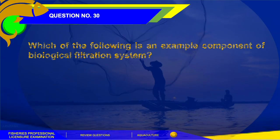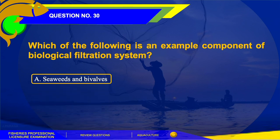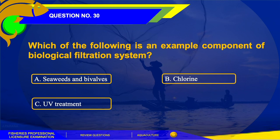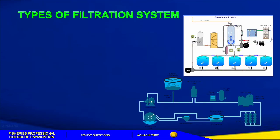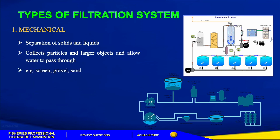Question number 30. Which of the following is an example component of a biological filtration system? The choices are: A. Seaweeds and bivalves, B. Chlorine, C. UV treatment, or D. Gravel and sand. The answer is letter A, seaweeds and bivalves. Mechanical filtration collects particles and larger objects and allows water to pass through — examples are screens, gravel, and sand.